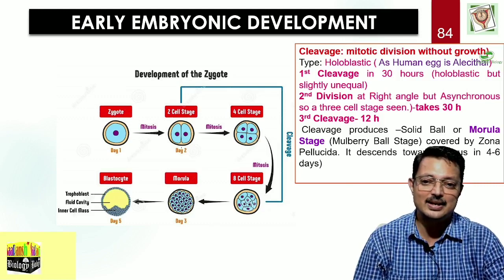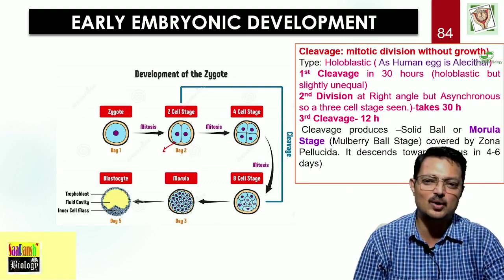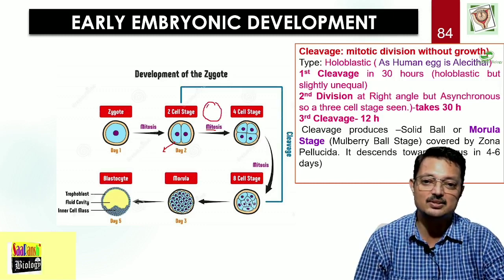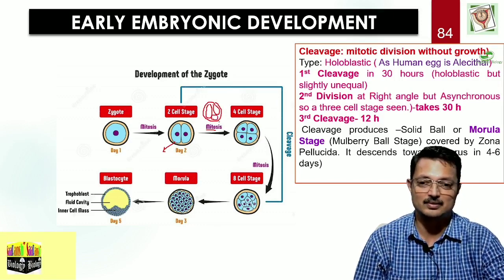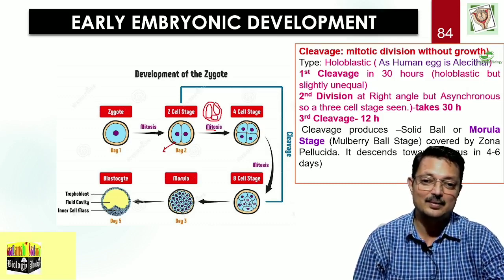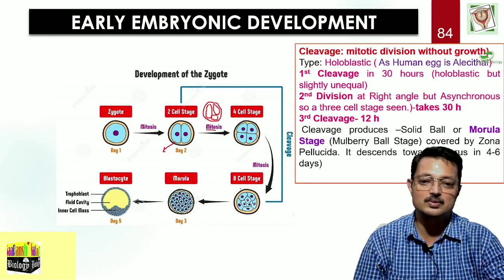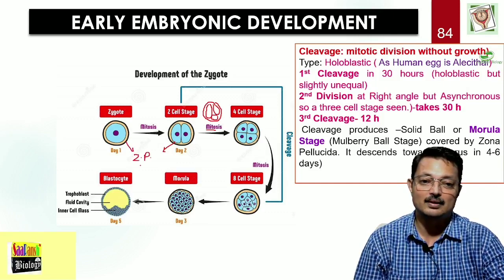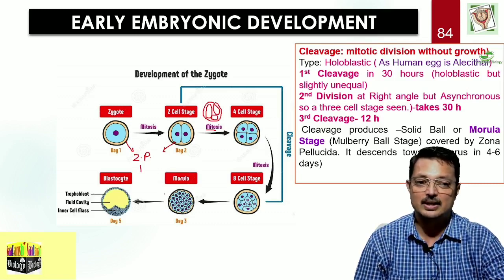You will find a two-cell stage, then a three-cell stage because one cell divides earlier, then a four-cell stage, then an eight-cell stage. Ultimately it results in a solid ball or mulberry-like stage called morula, covered by the zona pellucida. Now this morula will descend down the uterus from the ampullary-isthmic junction, and it takes around four to six days.